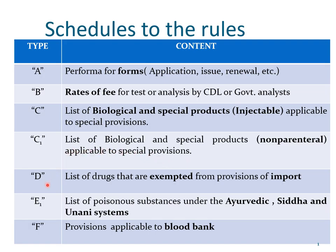Schedule D is a list of drugs that are exempted from the provisions of import. Schedule E1 is a list of poisonous substances under the Ayurveda, Siddha and Yunani systems. Remember, these schedules keep on getting updated from time to time — there was a Schedule E earlier which has been deleted and now there is Schedule E1 in place. Schedule F lays down the provisions applicable to blood banks, so if someone wishes to operate a blood bank, they have to comply with Schedule F.